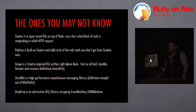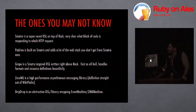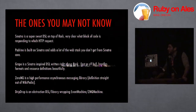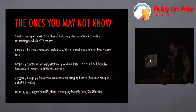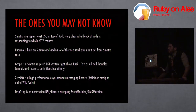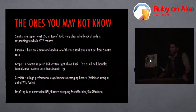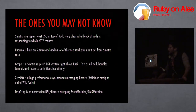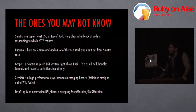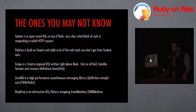ZeroMQ is a high-performance asynchronous messaging library — I pulled the description straight from Wikipedia, which has a really good article. If you go to the ZMQ homepage you can read a bit more about it. DripDrop is an abstraction DSL library for wrapping EventMachine with ZeroMQ.